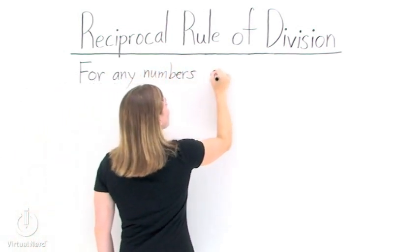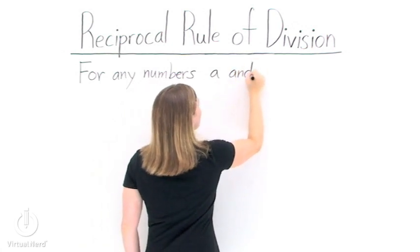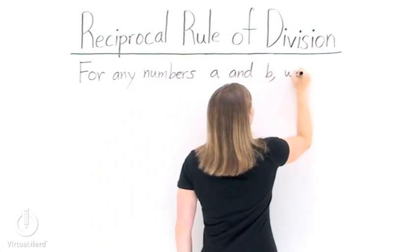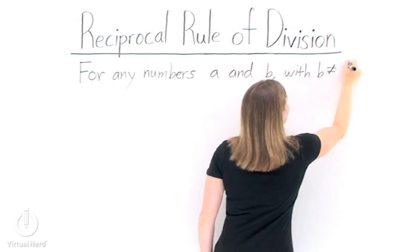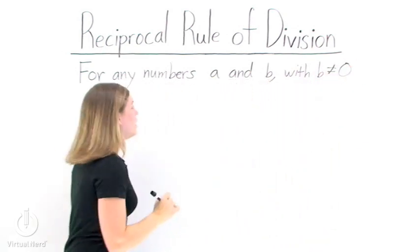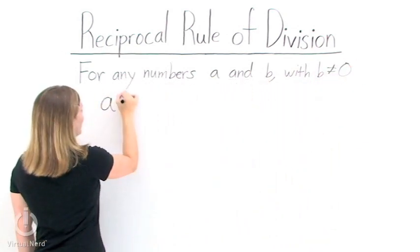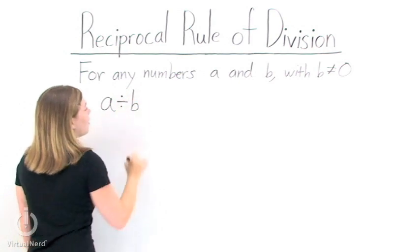So let's take two numbers, a and b, with b not equal to 0. If we want to divide these two numbers, we have a divided by b.